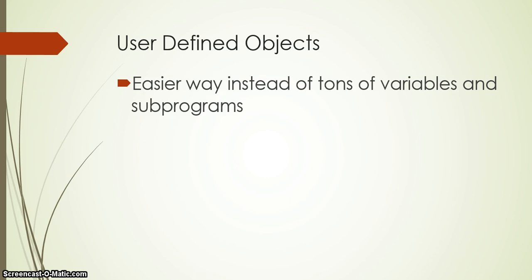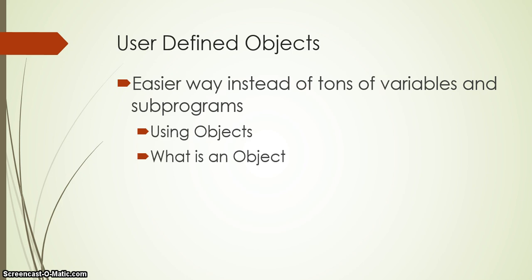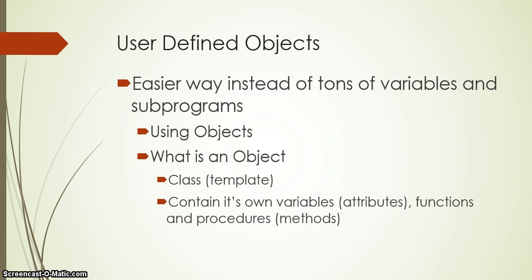Instead of having tons of variables and sub-programs, we can start using objects. An object is defined as a class or template that contains certain variables, functions, or procedures. The variables in a class or object we call attributes, and the actions that the object performs — which could be functions, procedures, or other things — we call the methods of our object.